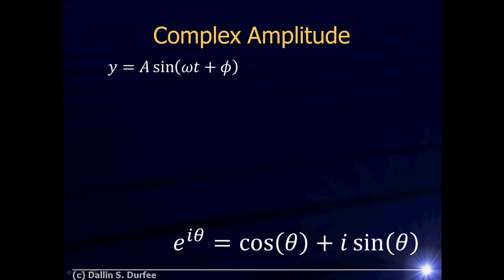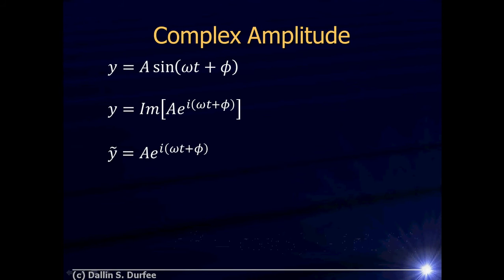I can just say that my real wave is the imaginary part of that. So if I define y as the imaginary part of Ae^(i(ωt+φ)), that's the same thing as the first line, according to Euler's equation. So I'm going to define this function ỹ, which is the thing I take the imaginary part of to get y.